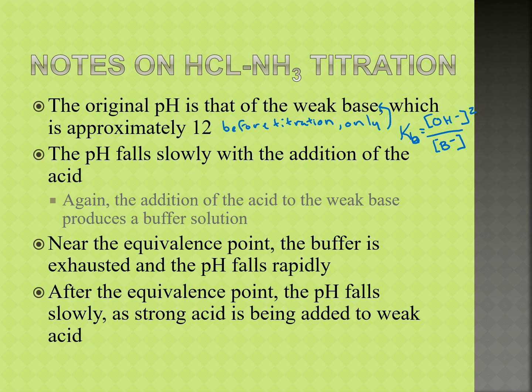As we then add in and start titrating, remember that at the beginning we're making a buffer solution. At one-half the equivalence point, the pH is equal to the pKa, just as we worked out in our previous podcast. The reason for that is because the rest of that factor is the log of one, which is zero — the rest of our Henderson-Hasselbalch equation. As we get close to the equivalence point, the buffer is going to be running out. As we dump in more and more acid, eventually we're going to run out of any weak base for it to react with, and once that runs out, our pH is going to fall rapidly through the equivalence point. Then we're going to end up with a low pH at the very end.